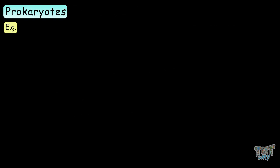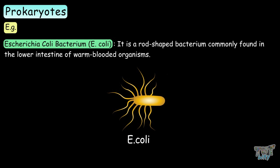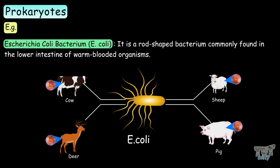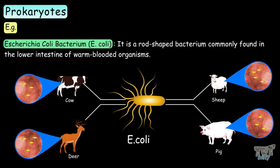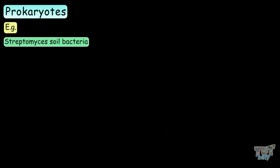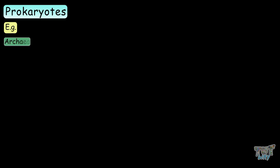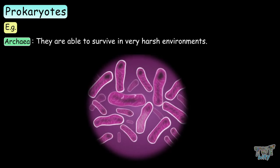Now let's have a look at some examples of prokaryotes. E. coli is a rod-shaped bacterium commonly found in the lower intestine of warm-blooded organisms. Streptococcus bacteria cause an infection of the back of the throat which includes the tonsils. Streptomyces soil bacteria are predominantly found in soil and in decaying vegetation, with most producing spores. Archaea are able to survive in a very harsh environment.